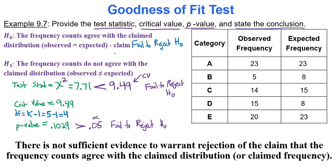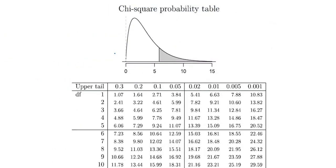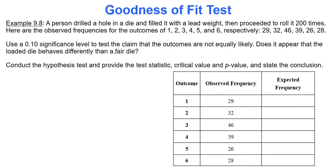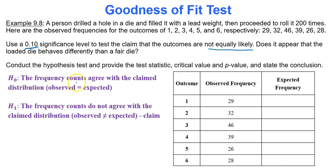Here's another example. A person drilled a hole in a die and filled it with a lead weight, then rolled it 200 times. The observed frequencies for outcomes 1 through 6 are: 29, 32, 46, 39, 26, 28. Using a 0.10 significance level, test the claim that the outcomes are not equally likely. The null hypothesis is that the frequency counts agree with the claimed distribution; the alternative is that they do not.